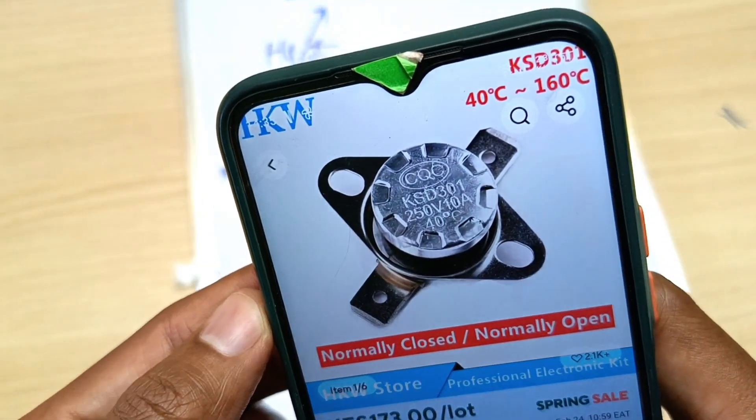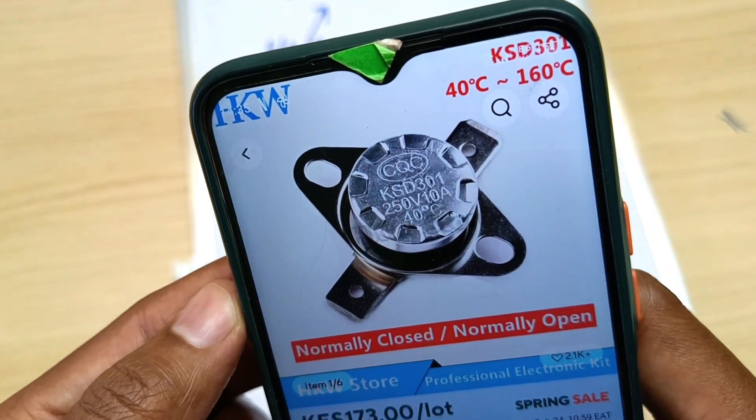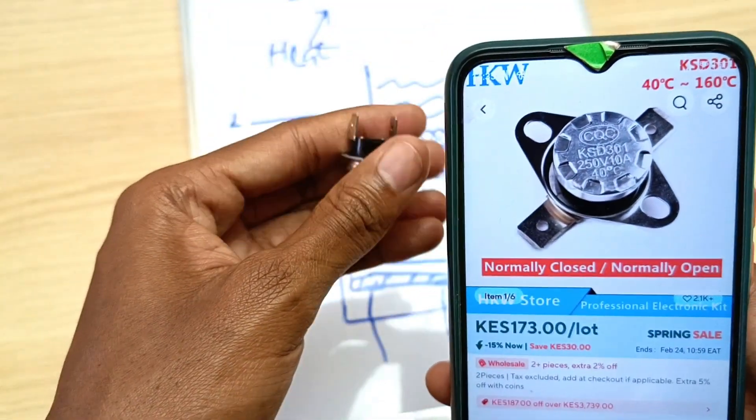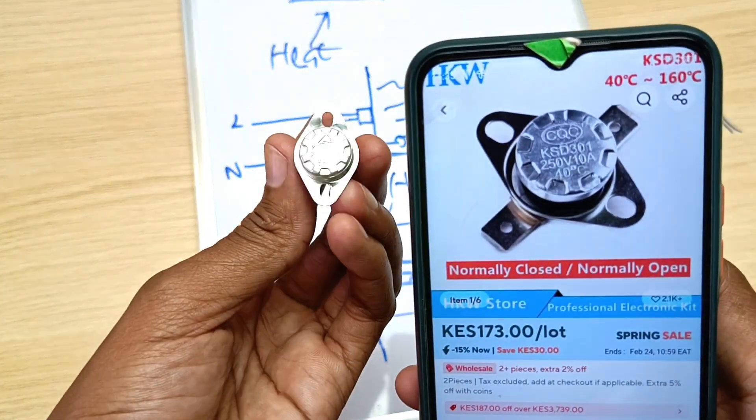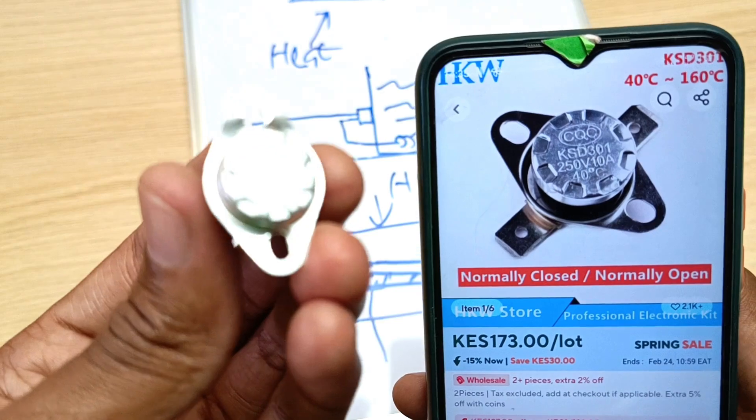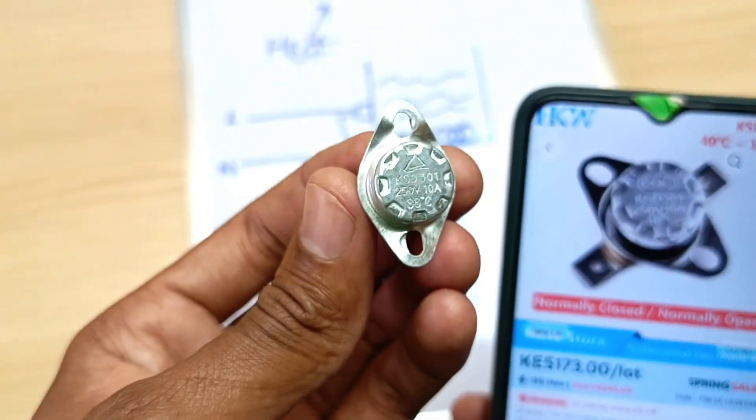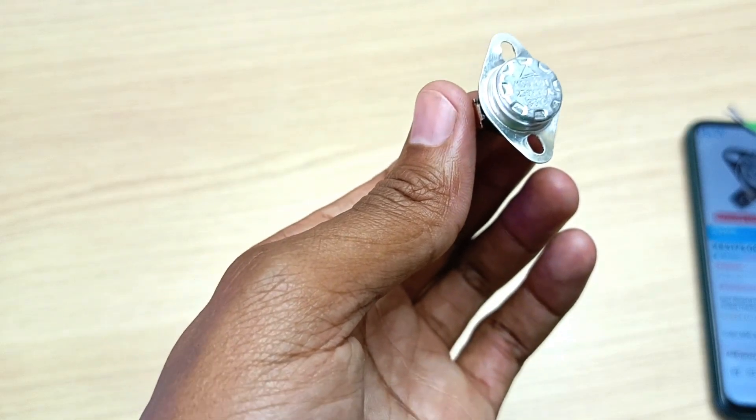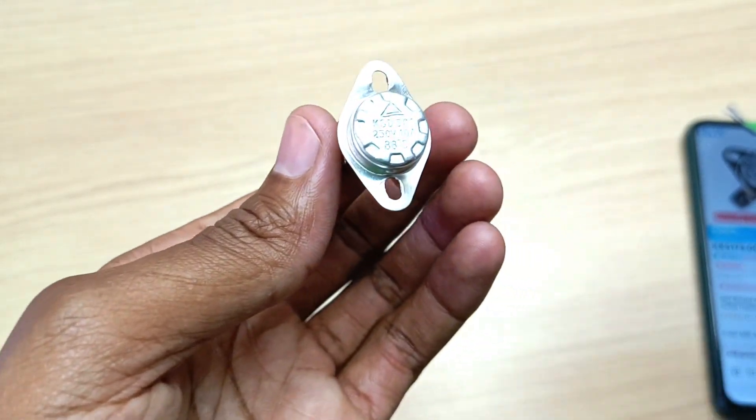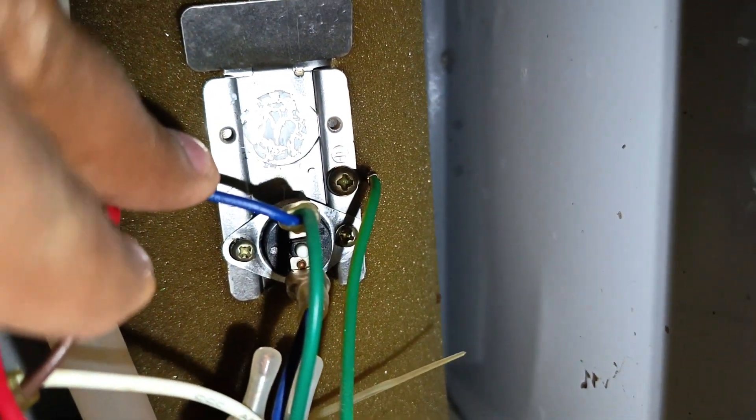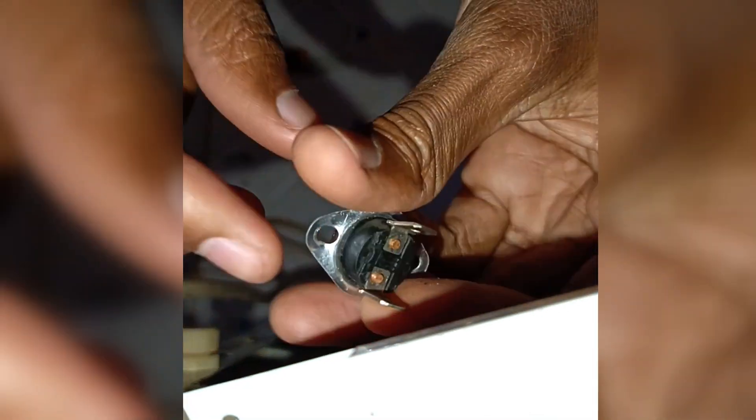You can see this one is different. This is 250 volts, 10 amperes at 40 degrees Celsius. So this is very different from what I have. So like I said at the beginning of the video, it's very important to know the specifications. Always replace the damaged thermostat with exactly the same specifications. The problem with this water dispenser is that it was never heating any water. It's a normal and hot water dispenser. So the normal function is working fine, but the hot water was not working.